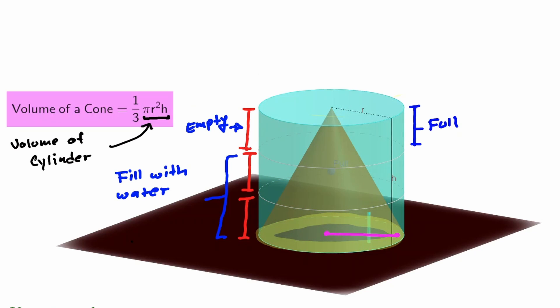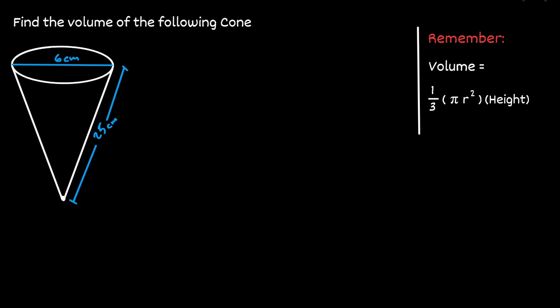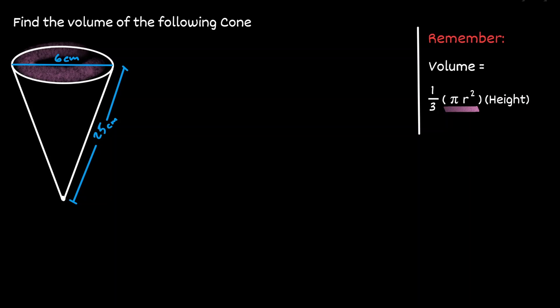Let's take a look at one example. We have said that the volume of a cone is equivalent to one third the volume of the cylinder. Let's concentrate on the area of the circle in our cone. The only thing that we need is the radius of the circle, but what we are given here is the diameter of the circle. So therefore the radius should be half of six, which is three.